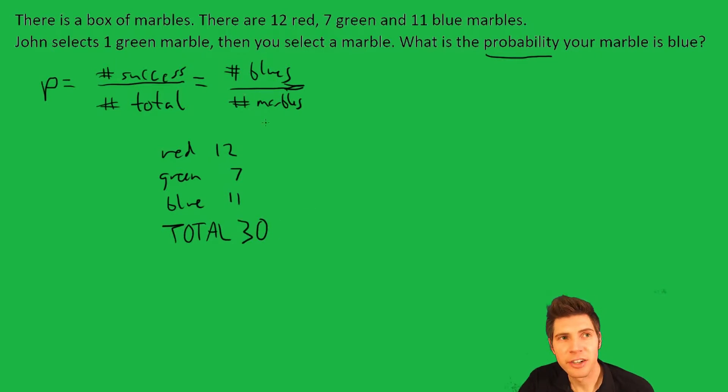Now what happens? John selects one green marble. So now what's happened is after he selects this green marble, there's only 6 green marbles. There's still 12 red, there's still 11 blue, but the total has also dropped down to 29.